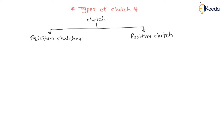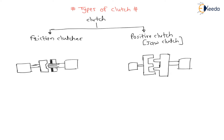Positive clutch is also called jaw clutch. These are the basically two types of clutches. Now in friction clutches, the power is transmitted with the help of friction between a fixed disc and a movable disc.